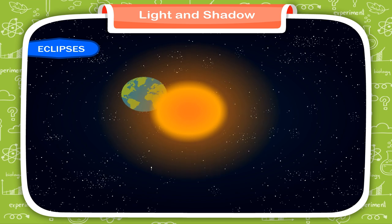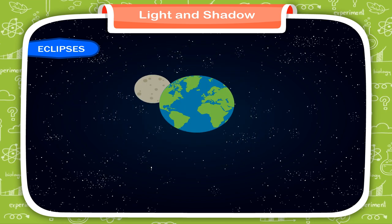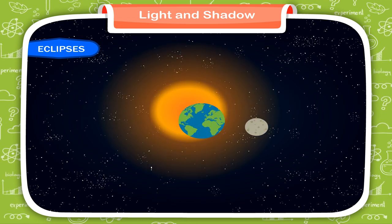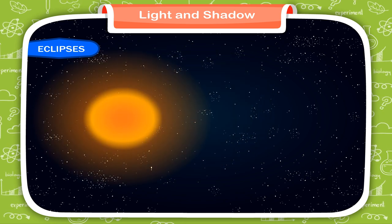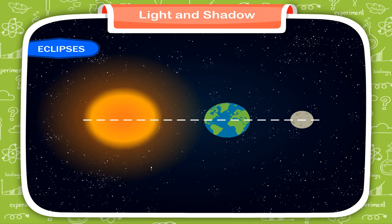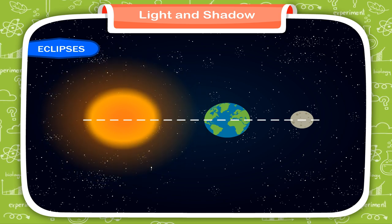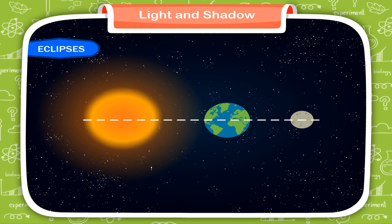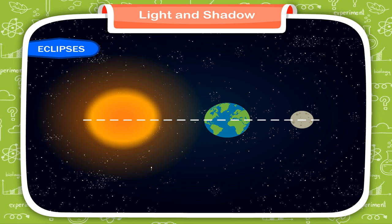Eclipses. We know that the earth revolves around the sun and the moon revolves around the earth. During the revolution of the earth and moon, it sometimes happens that the sun, the earth and the moon come in a straight line. In this case, light from the sun is obstructed by the earth or the moon. As a result, a shadow is formed. This phenomenon is called an eclipse.